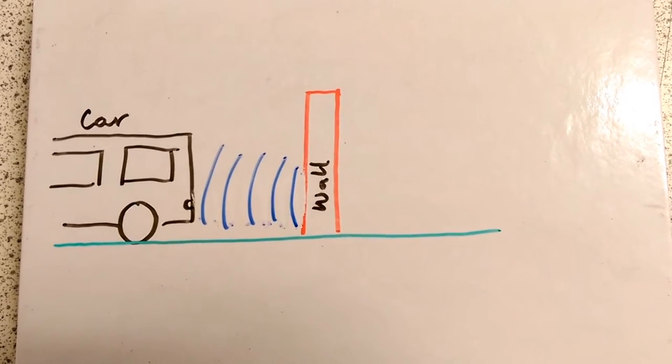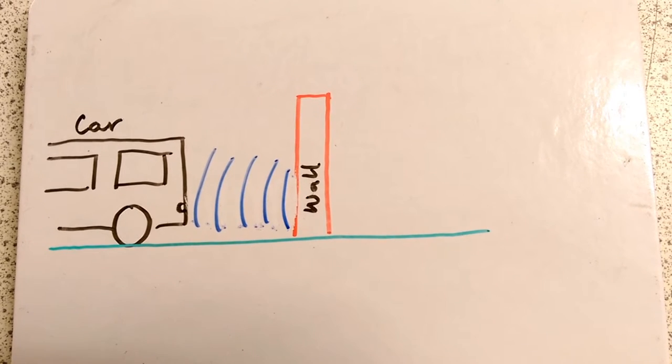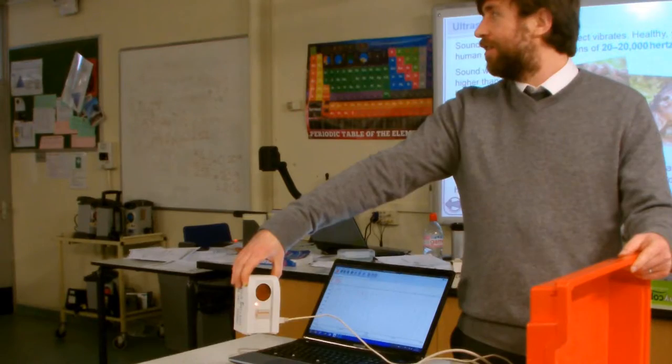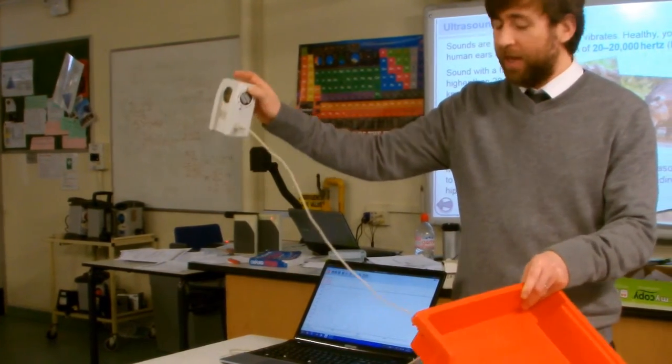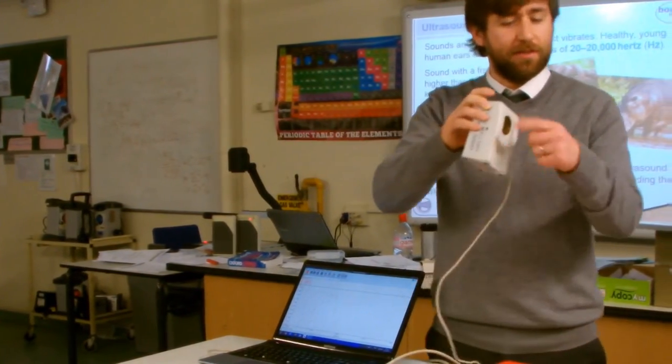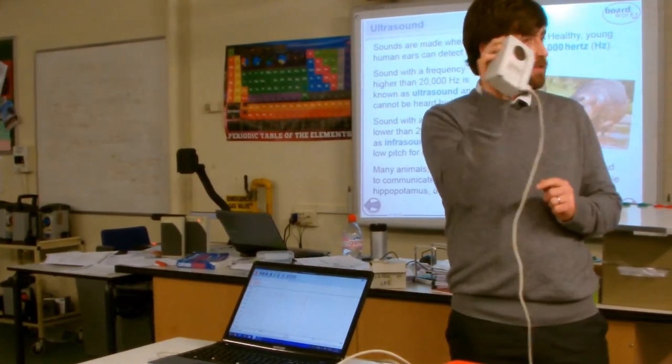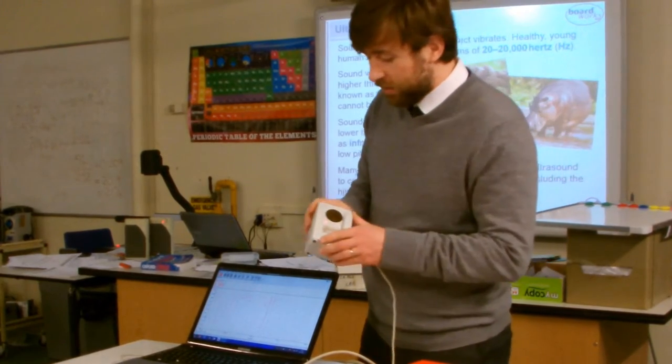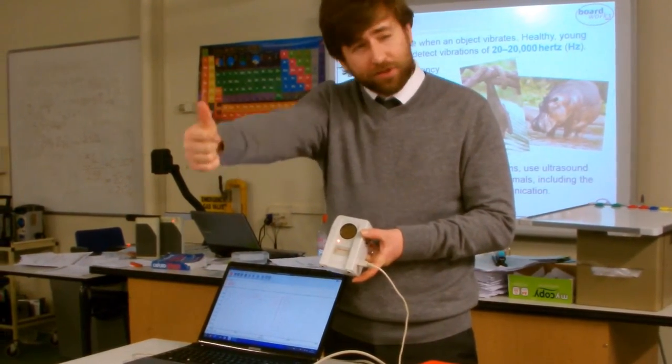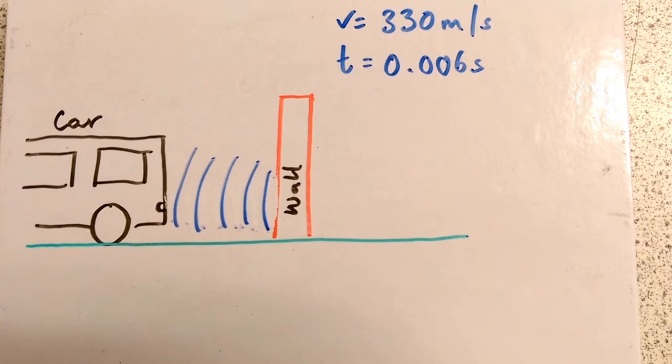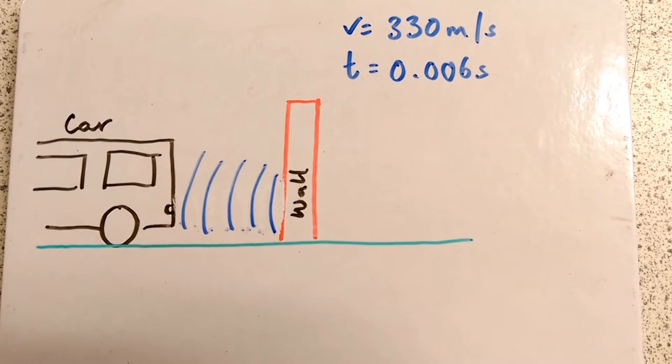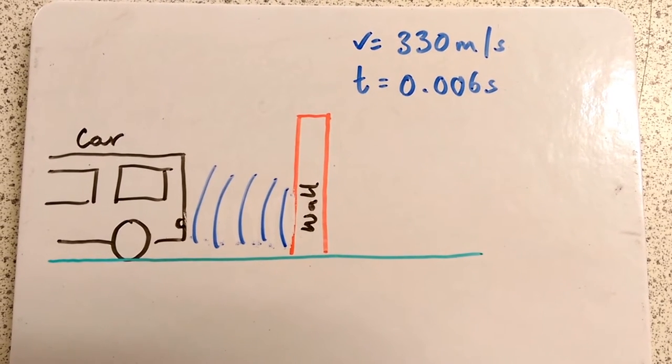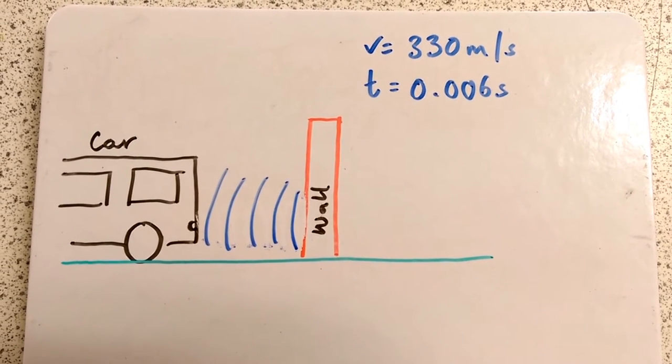Because sound waves have a certain speed in air, the computer inside the car can very quickly work out the distance to that wall. If you look at the back of most cars you'll see these little ultrasound sensors which measure the distance over which the wave has travelled and reflected back. The speed of sound in air is about 330 meters per second. Let's say it took 0.006 seconds for that pulse to be emitted and then received back by the car.